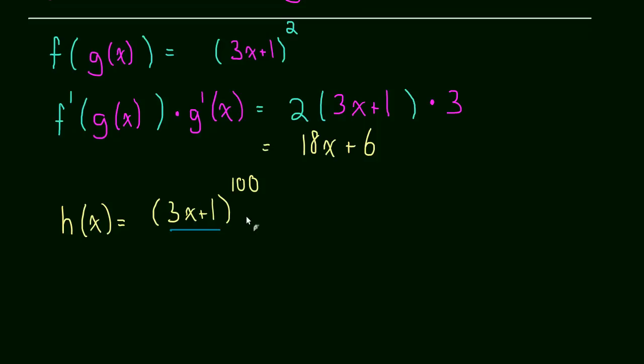So, like I said, let me redraw those lines. This is one function inside of what you can think of as a power function. Or, if you want, let me write this out real quick. Like, f of x would be x to the 100. And g of x would still be 3x plus 1. And then when we do f of g of x, we'd get 3x plus 1 to the hundredth power. So, anyways, let's continue with the chain rule.